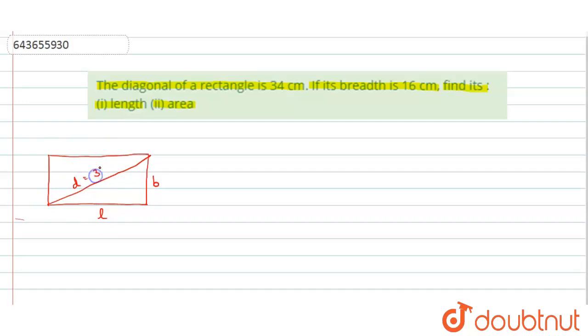Diagonal is given as 34 cm here, breadth is 16 cm, and in the first part we just need to find the length.